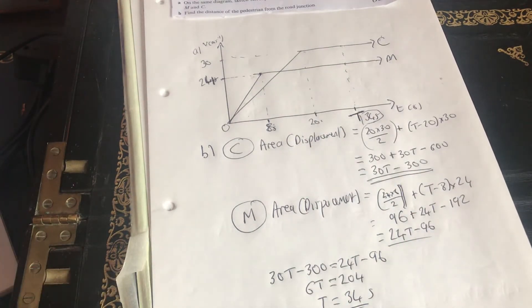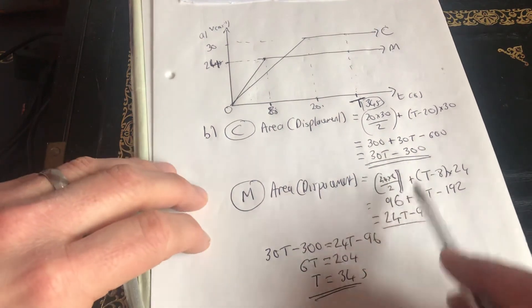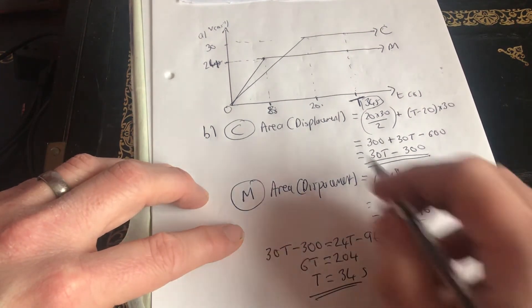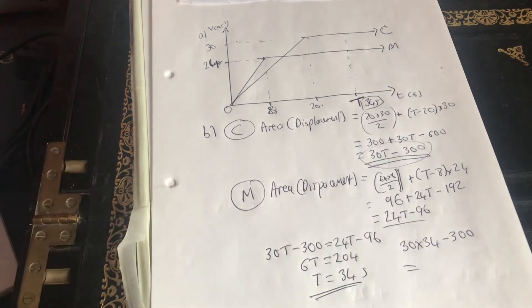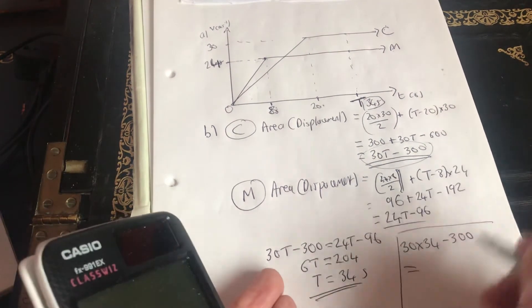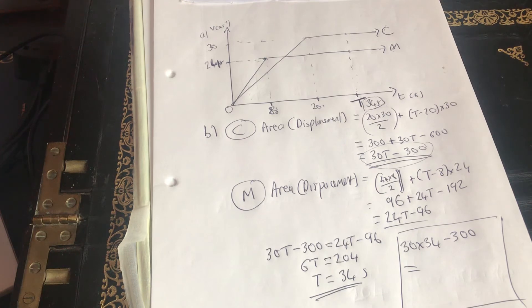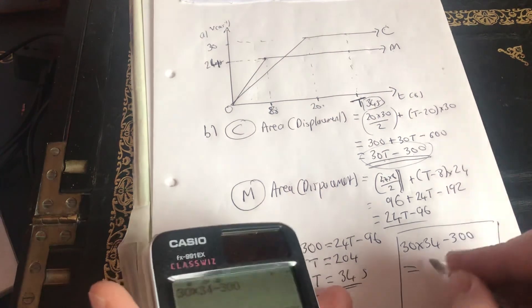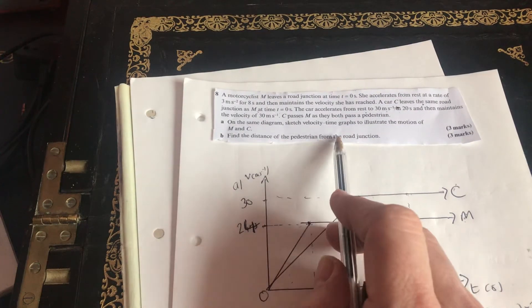The motorcyclist, the car, the pedestrian. Well, how far have we travelled? Let's just use one of these. Let's use the car. So 30 times 34 minus 300. So 30T minus 300. I'm using that one. So 30 times 34 minus 300 equals 720. So we've gone 720 metres, which is what the question wants. The question wants to find the distance of the pedestrian from the road junction.